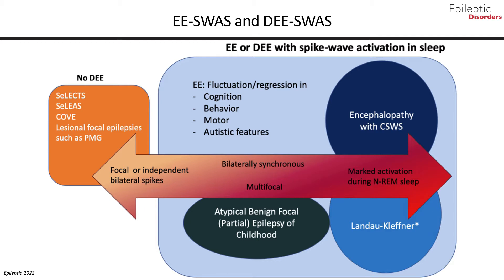Developmental and epileptic encephalopathies with spike wave activation in sleep refer to a spectrum of conditions characterized by various combinations of cognitive, language, behavioral, and motor regression associated with marked spike and wave activation in sleep. Regression is seen within weeks from the EEG pattern. These two syndromes share similar clinical features and management implications.